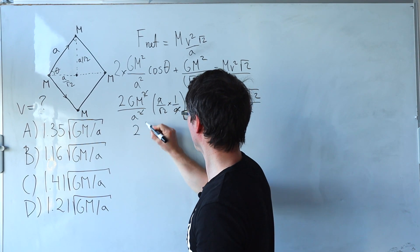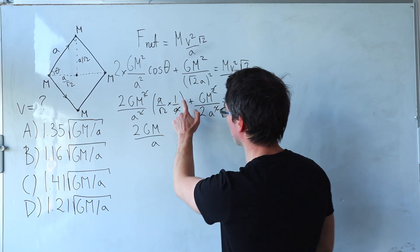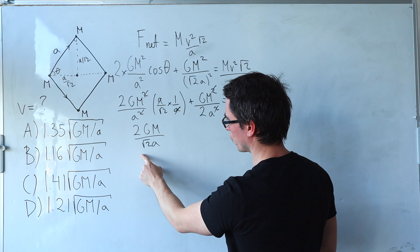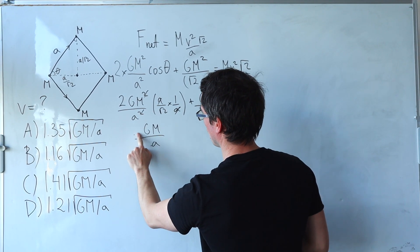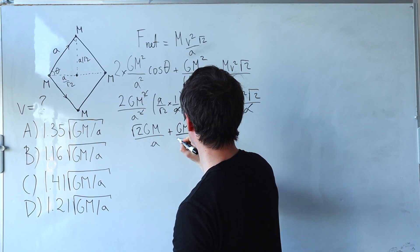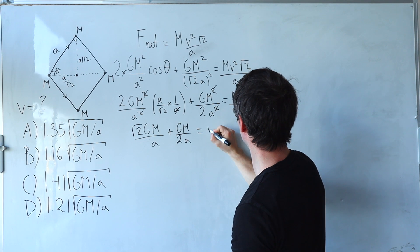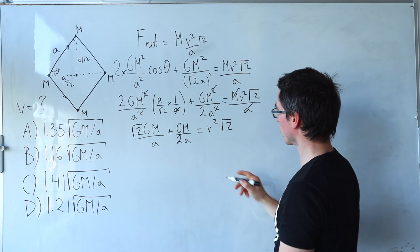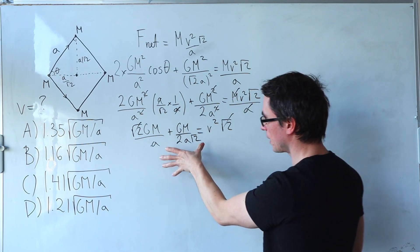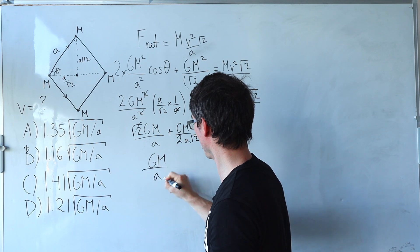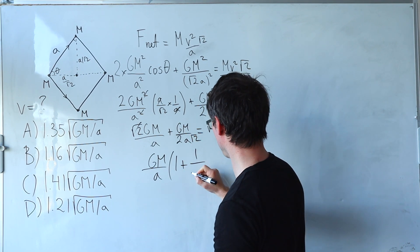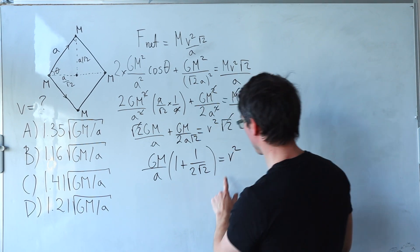And what we're left with on the left hand side will just be 2 g m over a. What are we left here? 1 over root 2. So just a factor of root 2. Shall we just tidy this up a little bit? 2 over root 2 will just give me root 2 at the top plus g m over 2 a. And this here will just be equal to v squared root 2. Now let's also get rid of this factor of root 2. Okay we're starting to get there. I'm going to factor out g m over a. What I'm going to be left with is just going to be 1 plus 1 over 2 root 2 which is going to be equal to v squared.